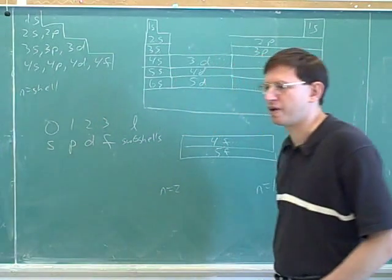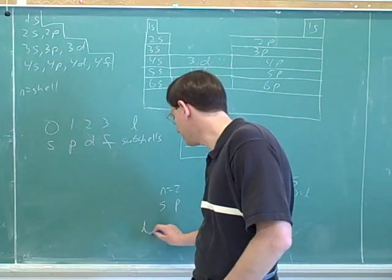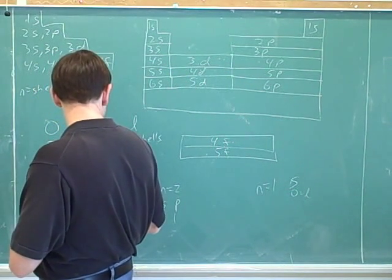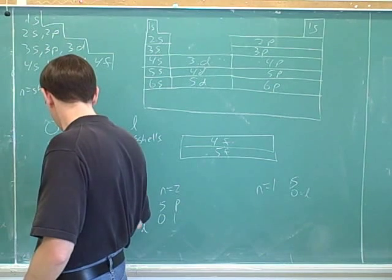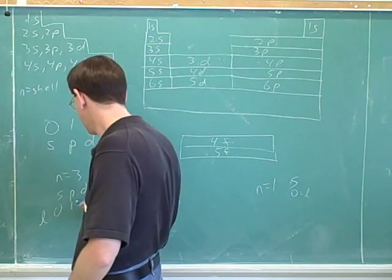How about when N equals two? What are the possible subshells? S and P. And L could be? Zero, one. Yeah. How about when N equals three? What are the possible subshells? S, P, and D. And the L's could be? Zero, one, or two. Okay.